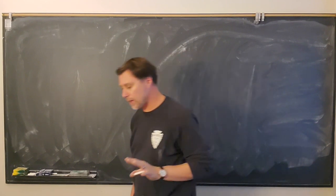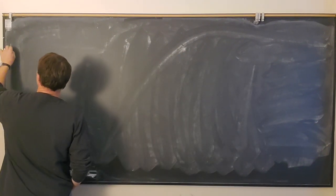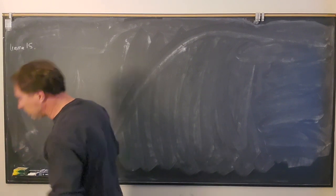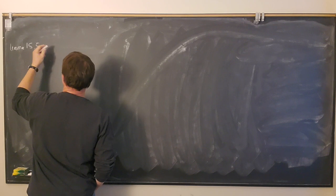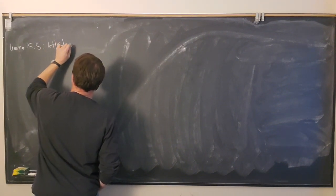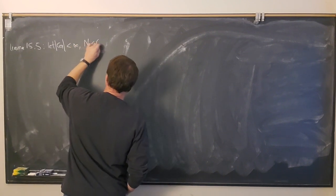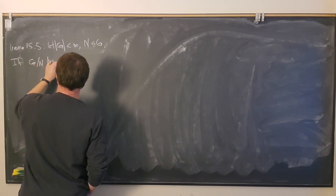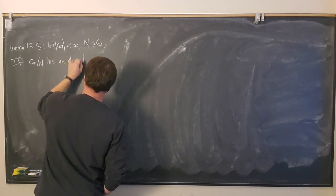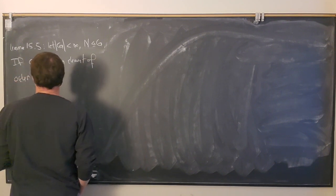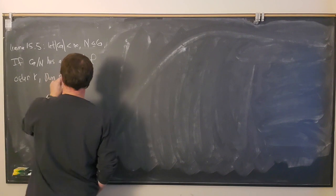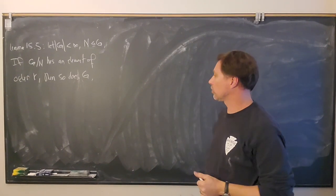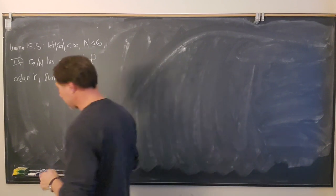Let's pick up where we left off. Let me write down what we did last time — that was Lemma 15.5. If G has finite order and N is a normal subgroup, then if the quotient G mod N has an element of order k, then so does G — the big group.